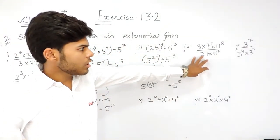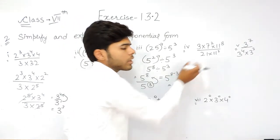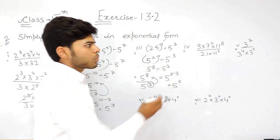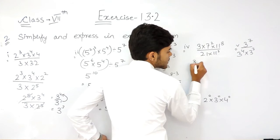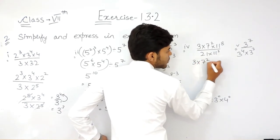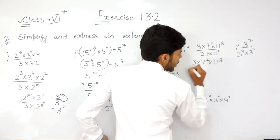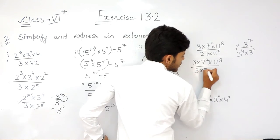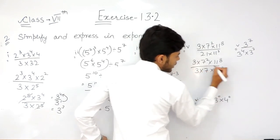In this question, this 21 is not in its prime factorized form, so we will convert it. We can write this like 3 into 7 to the power 2 into 11 to the power 8, upon 3 into 7 into 11 to the power 3.